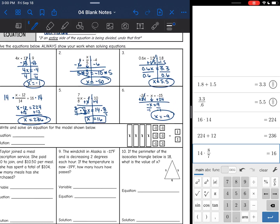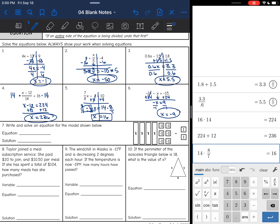Okay, number 7. It says write and solve an equation for the model shown below. So here is the left side of the equal sign. I have 1, 2, 3, 4 x's. And then I have negative 1, 2, 3, 4, 5, 6 equals positive 2.